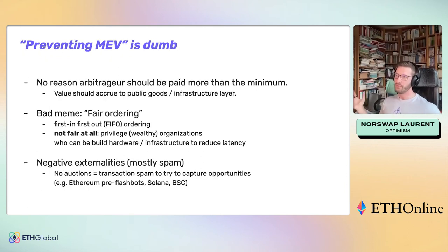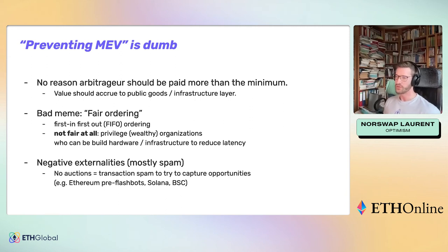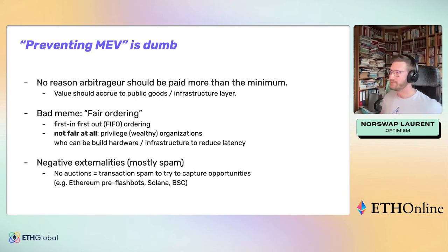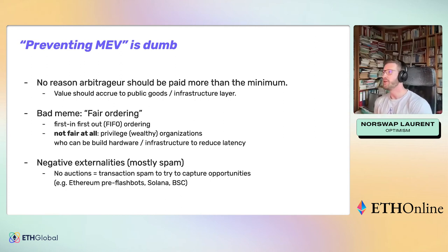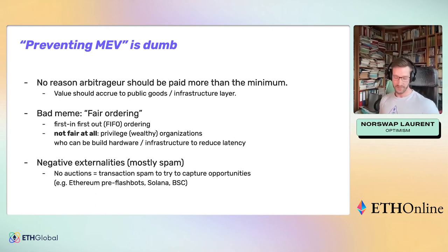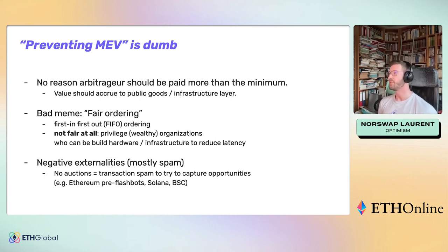Preventing MEV is dumb. You can't prevent arbitrages basically. One approach people try is 'fair ordering' — first in, first out — but this isn't fair at all; it just privileges organizations that can build hardware or low-latency infrastructure for MEV extraction. Before, at least there was open competition where a clever home operator could compete. Now you'd have the same flawed system but only accessible to rich organizations. And if you do this, you still get people spamming to capture opportunities — this has happened on Ethereum pre-Flashbots, on Solana, and on Binance Smart Chain.